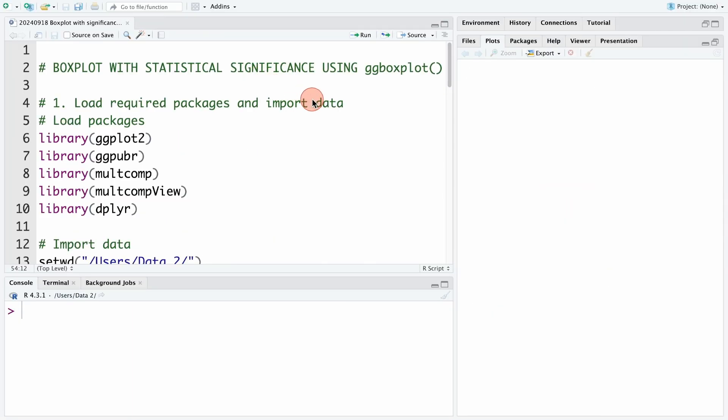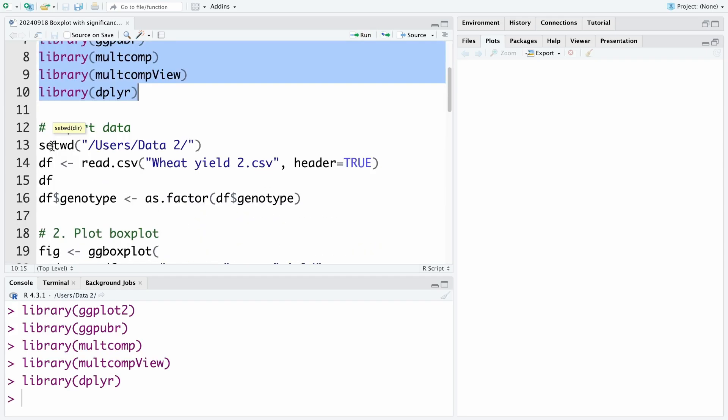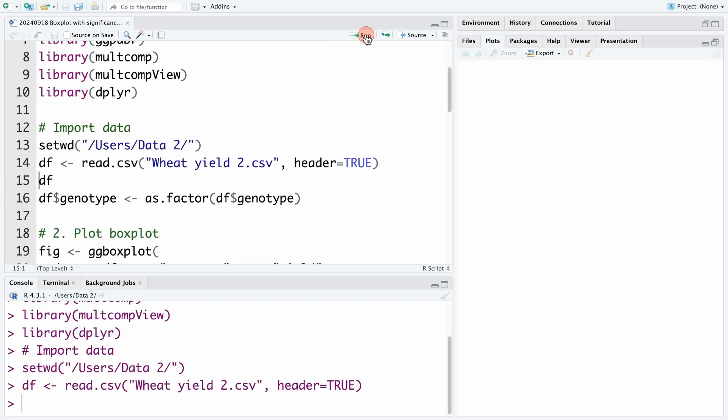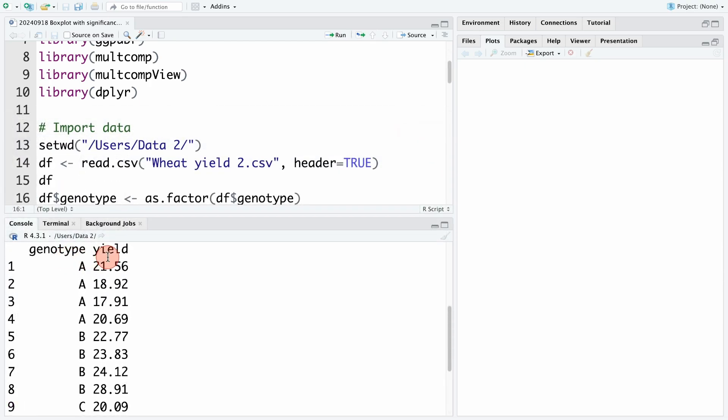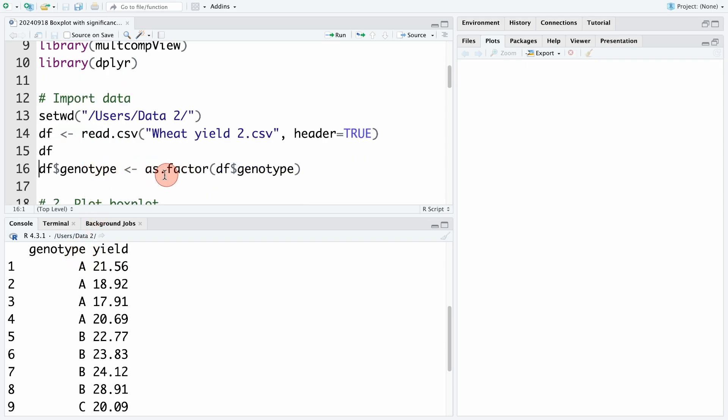First, we will load the required packages and import the data. We use two packages ggpubr and ggplot2 to plot boxplot, and two packages multcomp and multcompView to generate compact letters showing significant differences. The package dplyr is used to create a table showing the compact letters and their Y label values. We run to load them. We now import data and assign a name df for it. The data is the yield of three wheat genotypes and it has two variables, genotype and yield. Genotype is the factor variable, so we convert it into a factor variable by using the code as.factor.